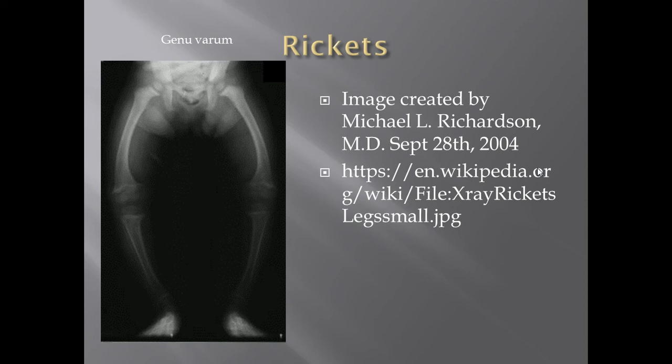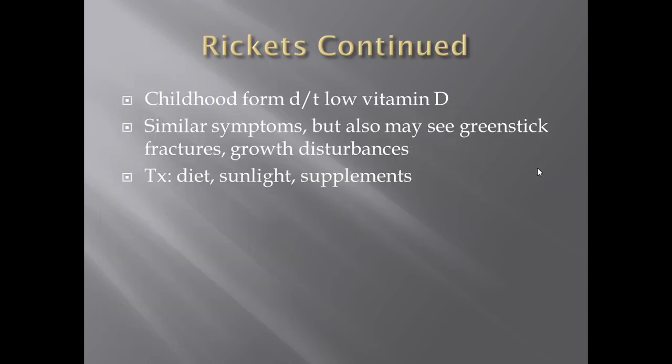Rickets is going to be a trademark finding. It's called, in scientific terms, genu varum — which is bow legging. This is a very common and almost hallmark symptom of rickets. In children, you'll see bending of the long bones — you can see the femur at a very peculiar angle causing a bow legging syndrome. You'll see many of the same symptoms as osteomalacia in adulthood, but here you may also see greenstick fractures, which are incomplete fractures, as well as growth disturbances.